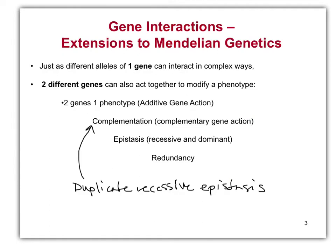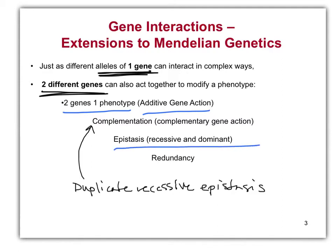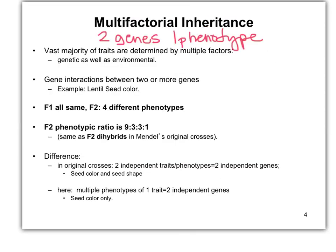So again, extensions to Mendel. Just as different alleles of one gene interact, two different genes can also interact together. The types we're going to talk about include: two genes, one phenotype, or additive gene action; something called complementation or complementary gene action, or duplicate recessive epistasis; and then standard recessive and dominant epistasis, and also redundancy. Let's start with two genes, one phenotype, also known as multifactorial inheritance.